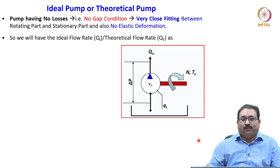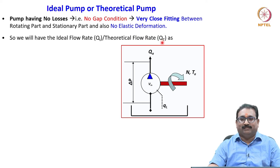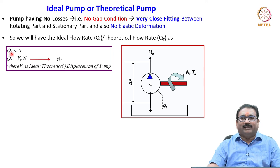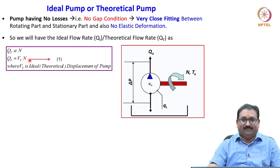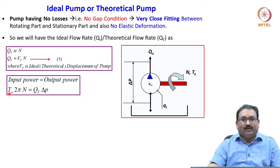We will have an ideal flow rate QI, also known as theoretical flow rate QT. The theoretical flow rate is directly proportional to speed N, or QT equal to VT into N. The input power given is equal to TA into 2π N, which equals QT — the theoretical flow rate — multiplied by delta P.